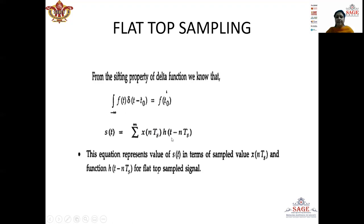If I analyze this equation, I get s(t) in terms of the sampled value x(nTs) and the function h(t minus nTs). That means the pulses are located at every integer multiple of Ts, that is 0, Ts, 2Ts, minus Ts, minus 2Ts. So the amplitude of each pulse is varying according to x(nTs), meaning the amplitude equals the message signal value at every Ts.